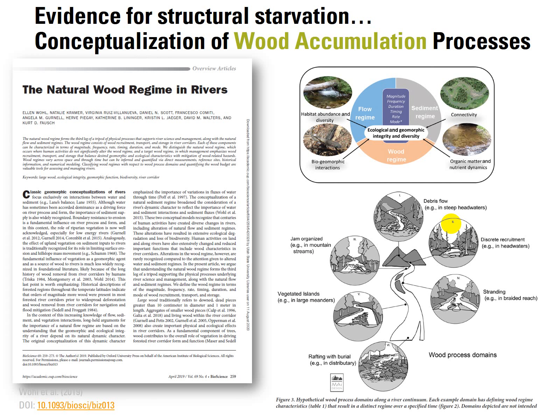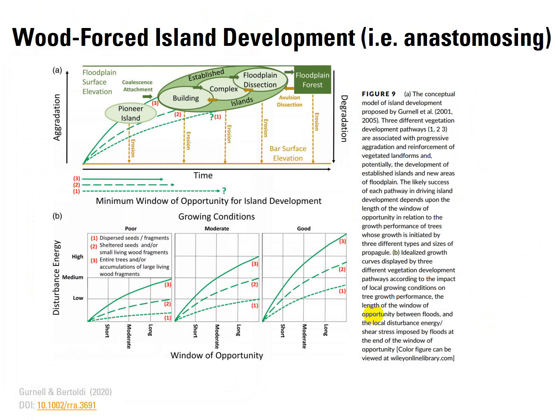There's also a lot of nice conceptualizations — one example here being this natural wood regime, a play on the natural flow regime that Ellen Wall and an impressive list of co-authors put together — talking about ecological and geomorphic integrity and diversity at the intersection of flow regime, sediment regime, and wood regime, and talking about these different wood process domains. So there's a lot of great conceptual basis to build off of, and indeed making the connection back to anastomosing.